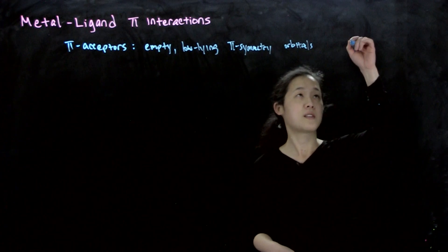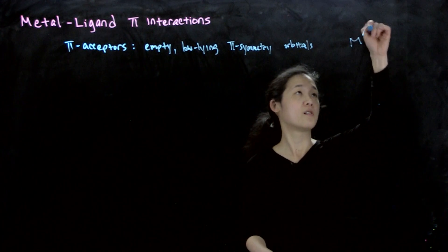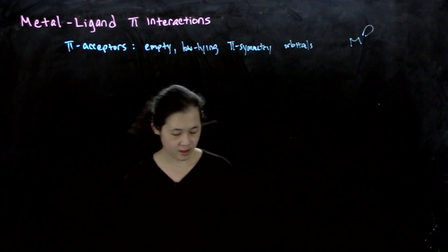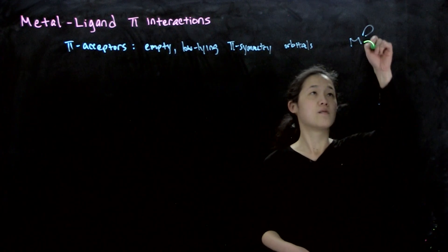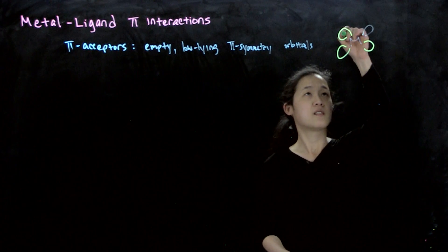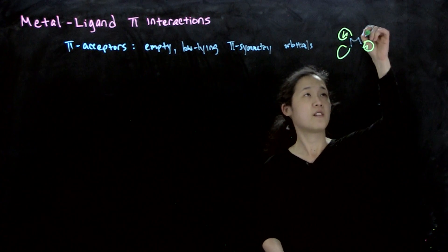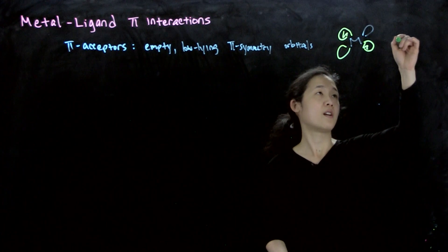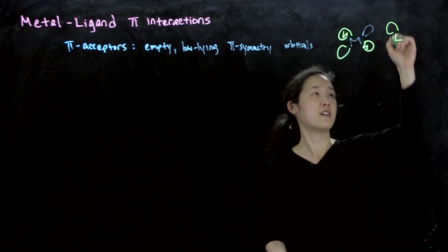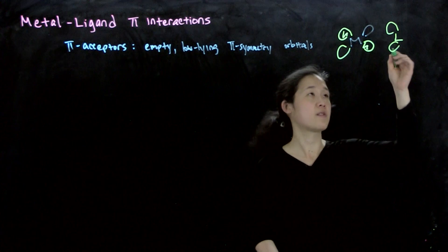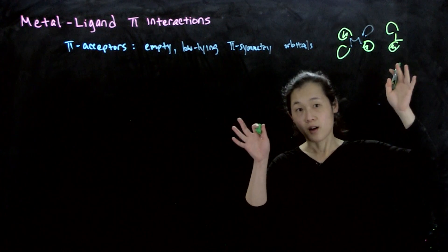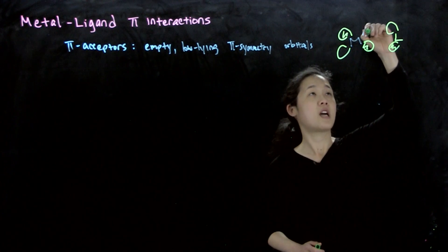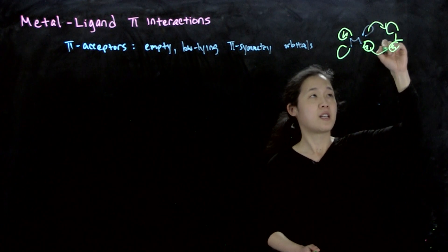So the example I gave was CO. So here we have electrons on the metal going into our empty ligand orbital — for CO, it was the pi star of CO, the CO pi star. So now we have a metal-to-ligand pi interaction.